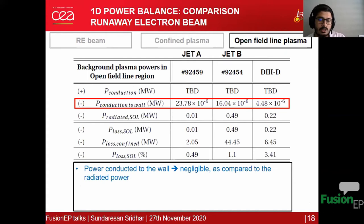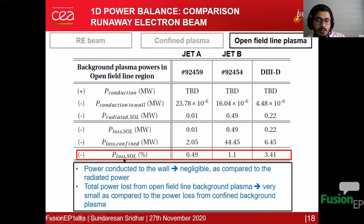Looking at the background plasma in the open field-line region, the power conducted to the wall is very small and negligible compared to the power radiated, and the total power loss from the open field-line background plasma is very small compared to the power lost from the confined background plasma.